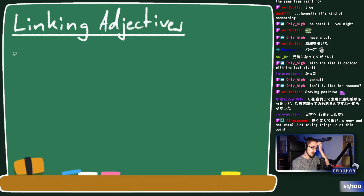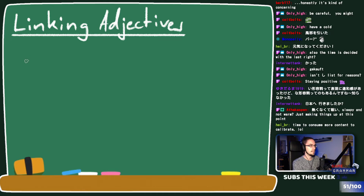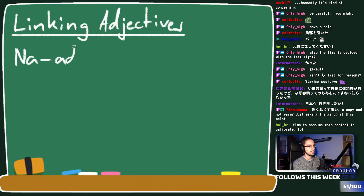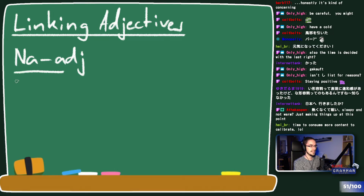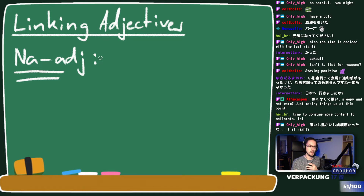Let's move on to na-adjectives, because luckily today there isn't that much more to cover. Na-adjectives are a little different. They don't have a te-form because na-adjectives work more like nouns, so we have to find another way of linking them. But it's not that bad.